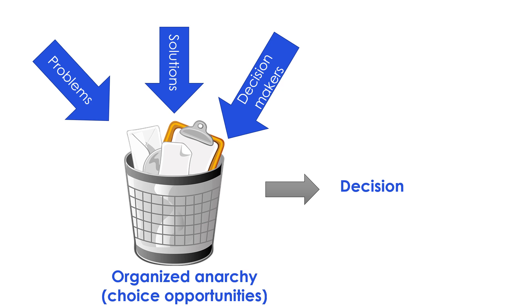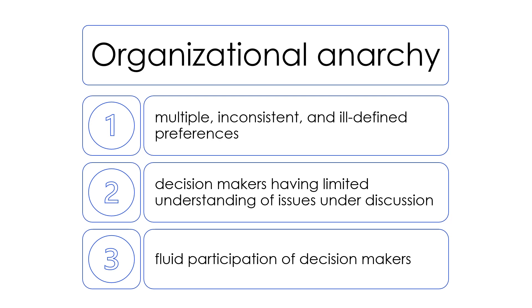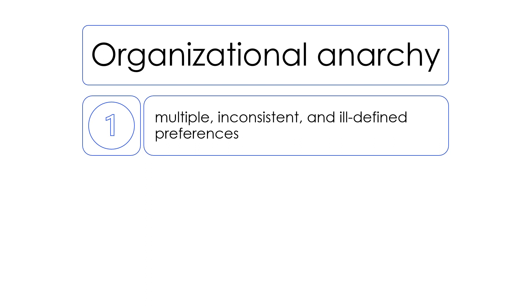A central construct of the Garbage Can Model is organized anarchy, which refers to organizations or decision situations — also known as choice opportunities — characterized by high levels of ambiguity and chaos. To determine if an organization is in an organized anarchy, we look at three areas: first, multiple inconsistent and ill-defined preferences; second, decision-makers have limited understanding of issues under discussion; and third, fluid participation of decision-makers.